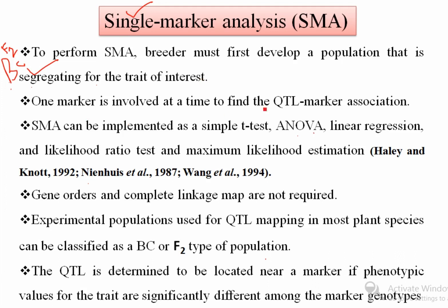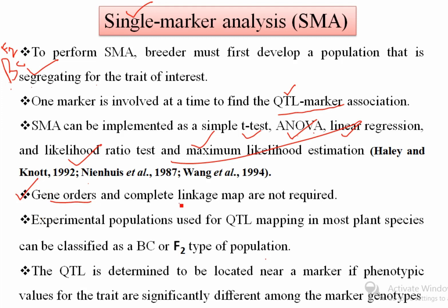One marker is involved at a time to find the QTL-marker association. With the help of a marker, we want to identify the location of the QTL and what percentage of phenotypic variation is explained by this QTL. SMA can be implemented as a t-test, ANOVA, linear regression, likelihood ratio test, or maximum likelihood method. Importantly, gene order and a complete linkage map are not required for single marker analysis.